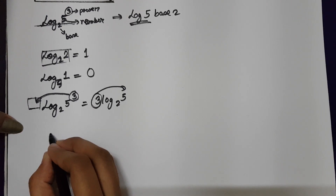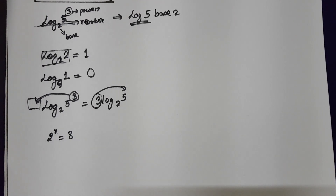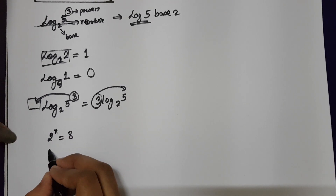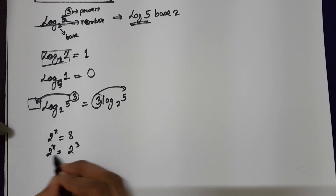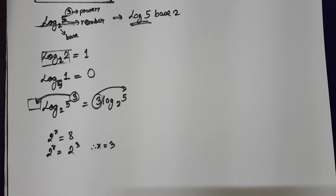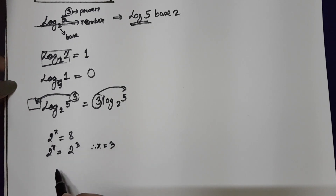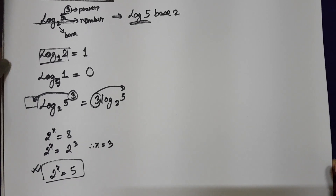Suppose you have maths like 2 to the power of x equals 8. In that case, you can solve it as 2 cubed, then since the numbers are both 2, we can equate the powers, so x equals 3. But if we have 2 to the power of x equals 5, then we need to solve this using the formulas of log.